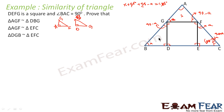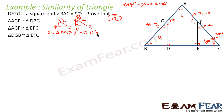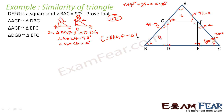In triangle AGF and triangle DGV, angle A is equal to angle D, both equal to 90 degrees. Angle G is equal to angle B, both equal to A degrees. Therefore, triangle AGF is similar to triangle DGV by AA.